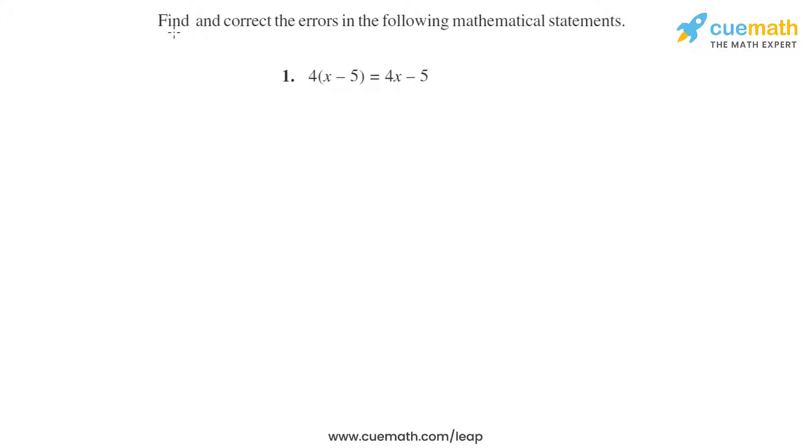In this exercise, the instructions are to find and correct the errors in the following mathematical statements. Question one: 4 times (x minus 5) equals 4x minus 5. We have to first identify the error and then correct it.